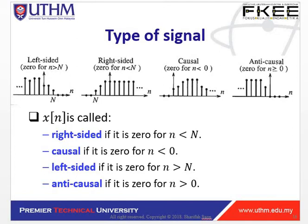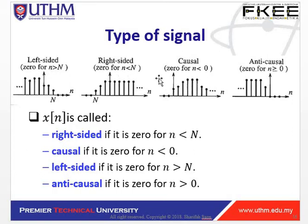Next is the type of signal. For a left-sided signal, x[n] is called left-sided if it is zero for n greater than some capital N. For a right-sided signal, the signal is zero for n less than some capital N. For causal, it is zero for n less than zero. For anti-causal, it is zero for n greater than or equal to zero. A discrete periodic signal repeats every N samples — this is the periodic signal.